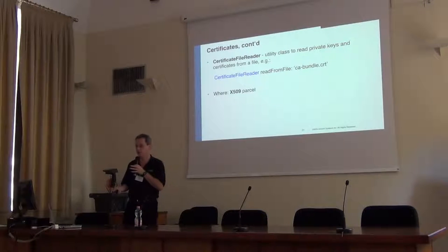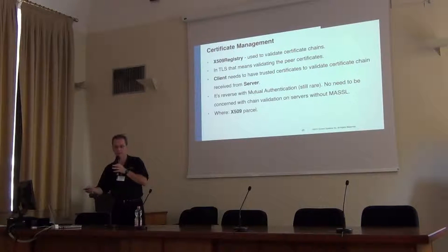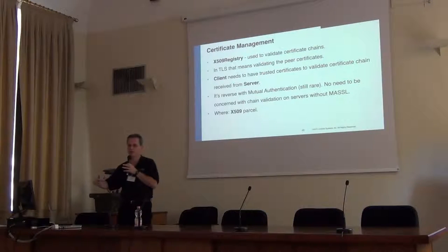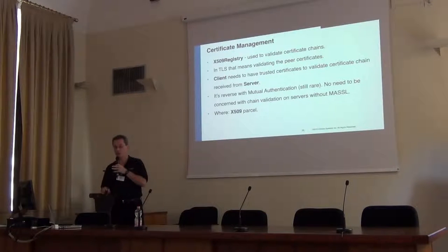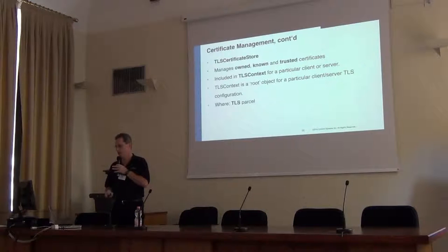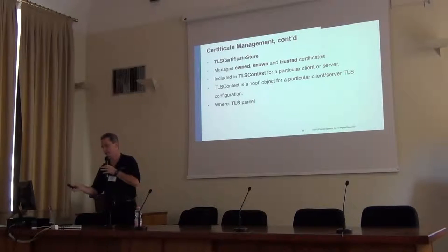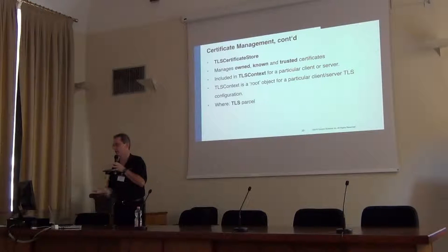The certificate files can be in different formats depending on which certification authority you work with — there is no real standard, so you have to figure that part out with your CA. That's in the X509 parcel. There is a utility class called CertificateFileReader which takes the file and reads it into memory. There is also X509Registry, a class that validates the certificate chains — when you have a bunch of certificates, you need to make sure they fall in order of certificate authority, intermediate, and so on. With mutual authentication, there are trusted certificates to manage. The TLS parcel has TLSCertificateStore, which manages which certificates you already know about, which you own, which are trusted, and so on.